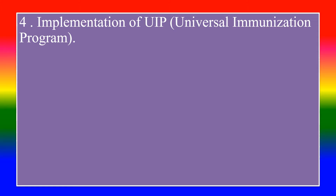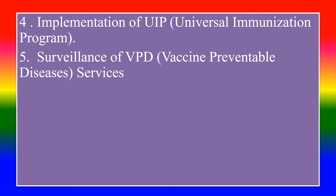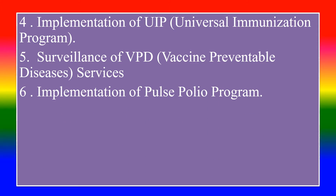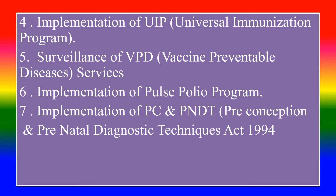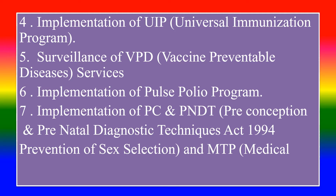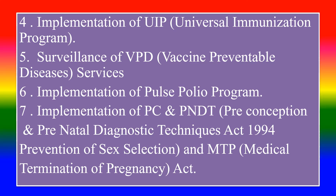Fourth, implementation of UIP — the Universal Immunization Program. Fifth, surveillance of vaccine-preventable disease services. Sixth, implementation of the Pulse Polio Program. Seventh, implementation of the PC PNDT — Pre-Conception and Pre-Natal Diagnostic Techniques Act, 1994 — for prevention of sex selection, and the MTP — Medical Termination of Pregnancy Act.